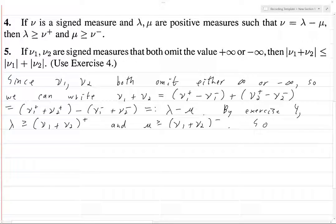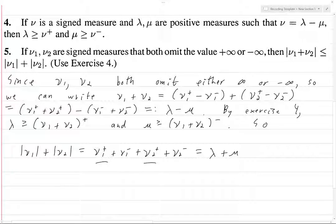So then, we have |ν₁| plus |ν₂|. Well, what is this? This is just ν₁⁺ plus ν₁⁻ plus ν₂⁺ plus ν₂⁻, and what is this? This is just λ plus μ, because we see we get the ν₁⁺ and the ν₂⁺, and that's that, and then we get ν₁⁻ and ν₂⁻, and that's just this, and because we have the minus here, we've got to account for that.